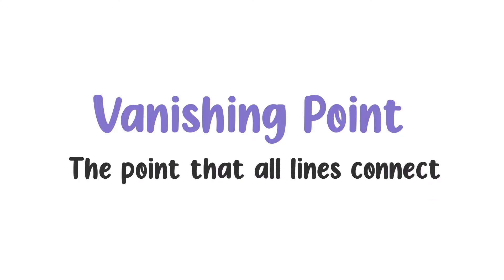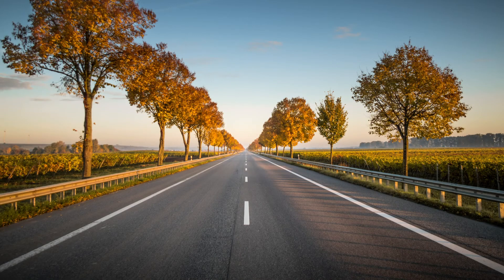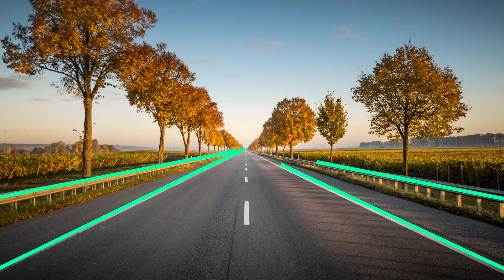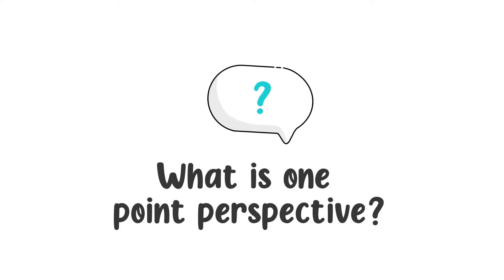The next definition is the vanishing point. This is the point at which all lines connect. A very common example of a vanishing point is a highway — the edges of the road converge at one point, which is the vanishing point.